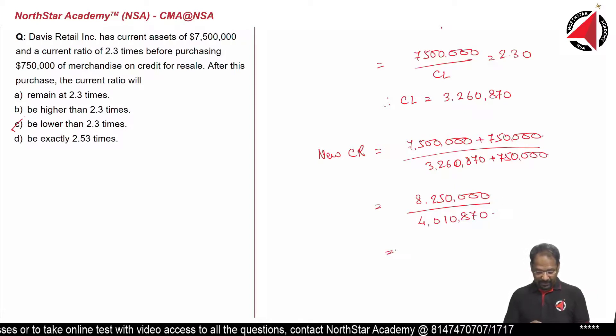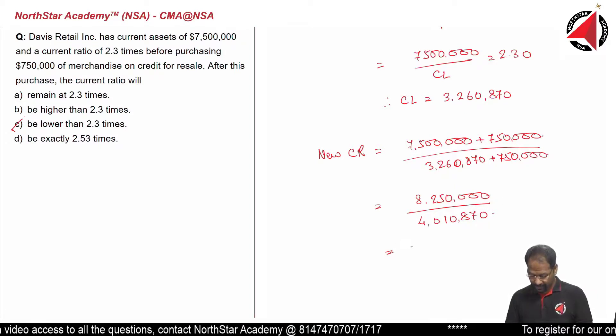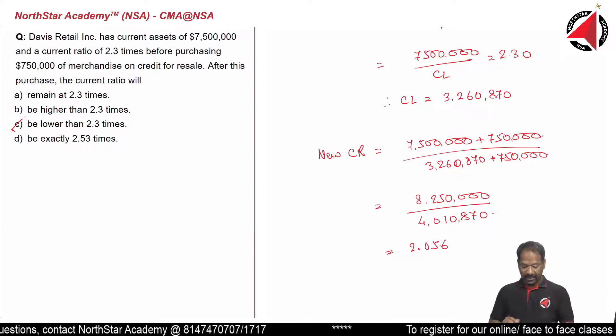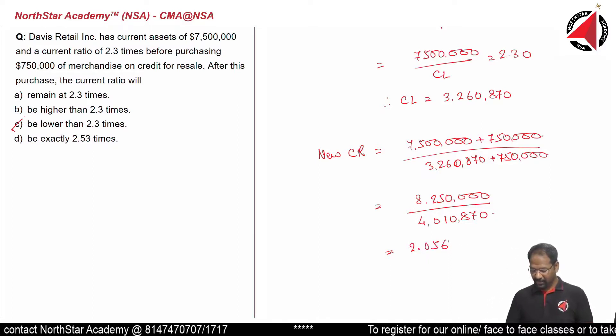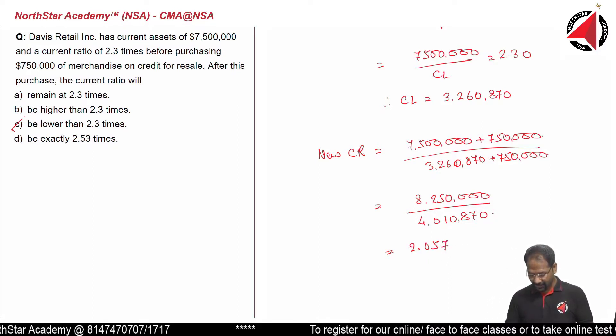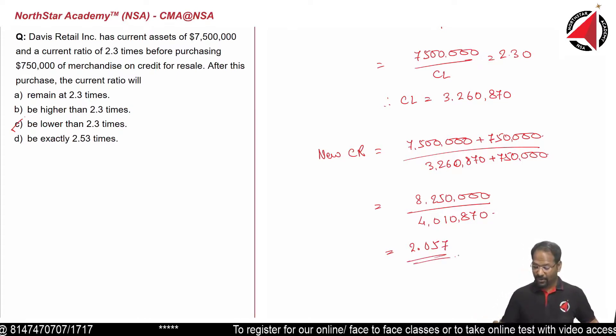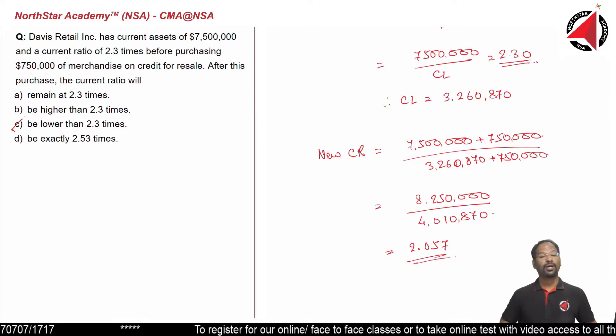Now let's calculate this, and we would get 2.05689, or 2.057. If you look at this new ratio, this new ratio is lower than the original ratio of 2.30.